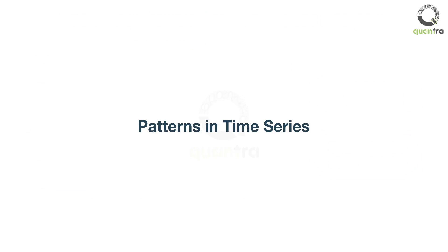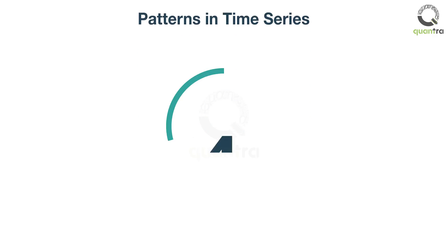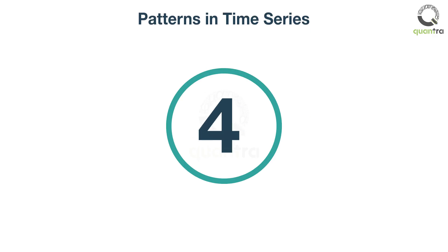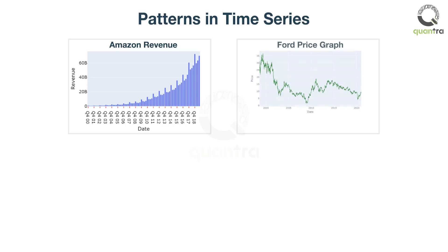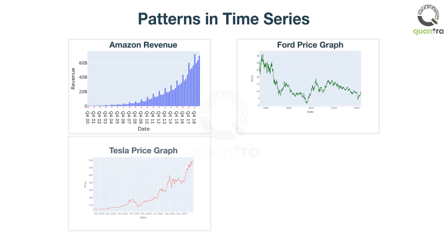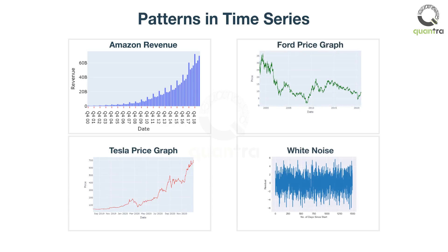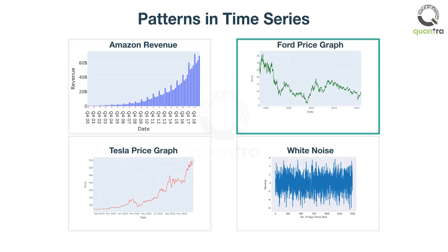After receiving this data, you should try to find any patterns in it. Broadly speaking, there are four components or patterns of a time series: seasonal, cyclical, trending, and white noise. Identifying these patterns will help you choose the correct time series model for analysis.